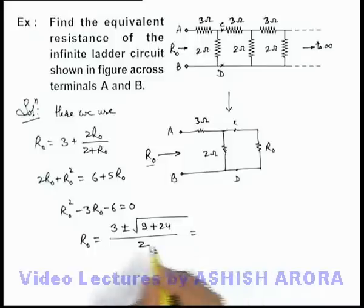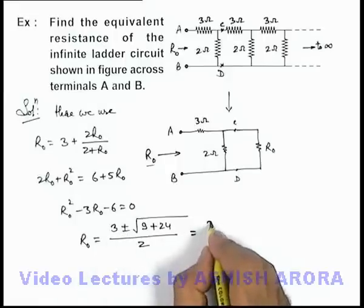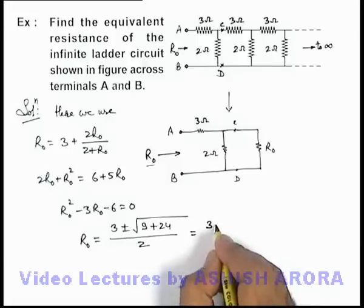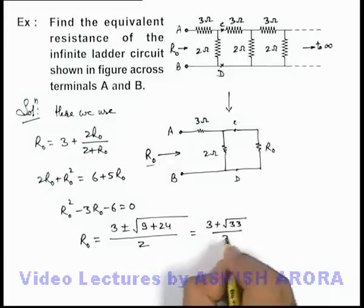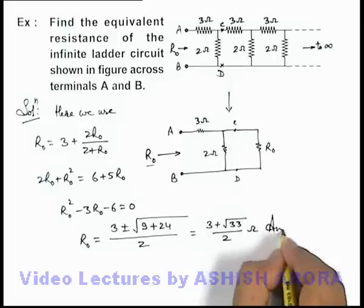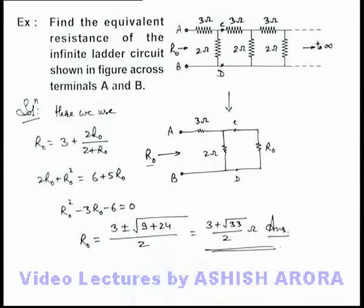So the final result: we can ignore the negative sign because resistance can never be negative. We'll discard it, and the only result we'll have as our solution will be (3 plus square root of 33) divided by 2 ohms. That will be the answer to this problem, which is the resistance of this infinite ladder network.